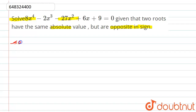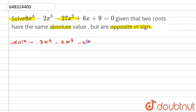Let's see the solution here. Simply what we have to do is find the roots of the equation: 8x⁴ minus 2x³ minus 27x² plus 6x plus 9 equals 0.